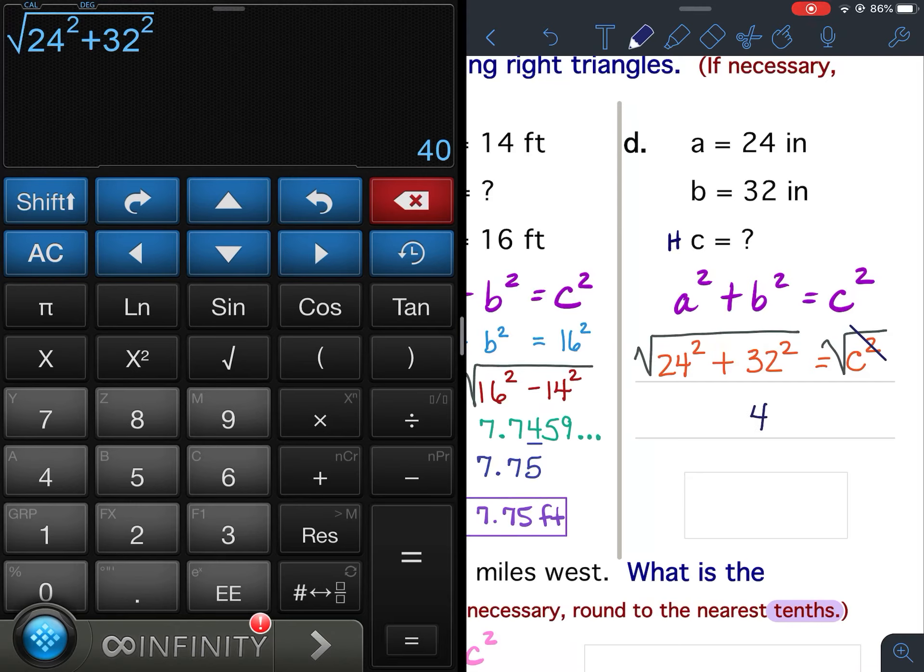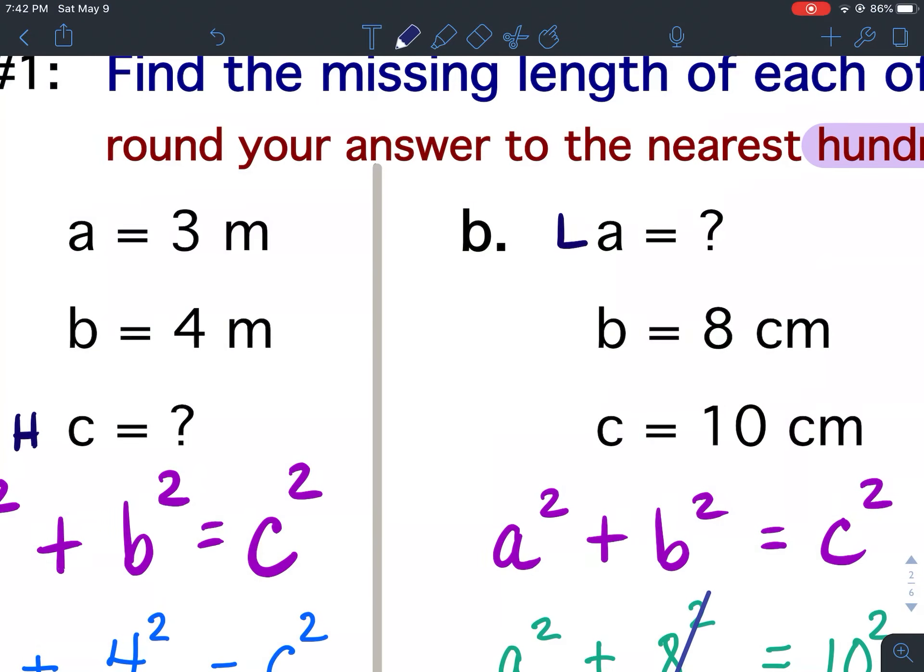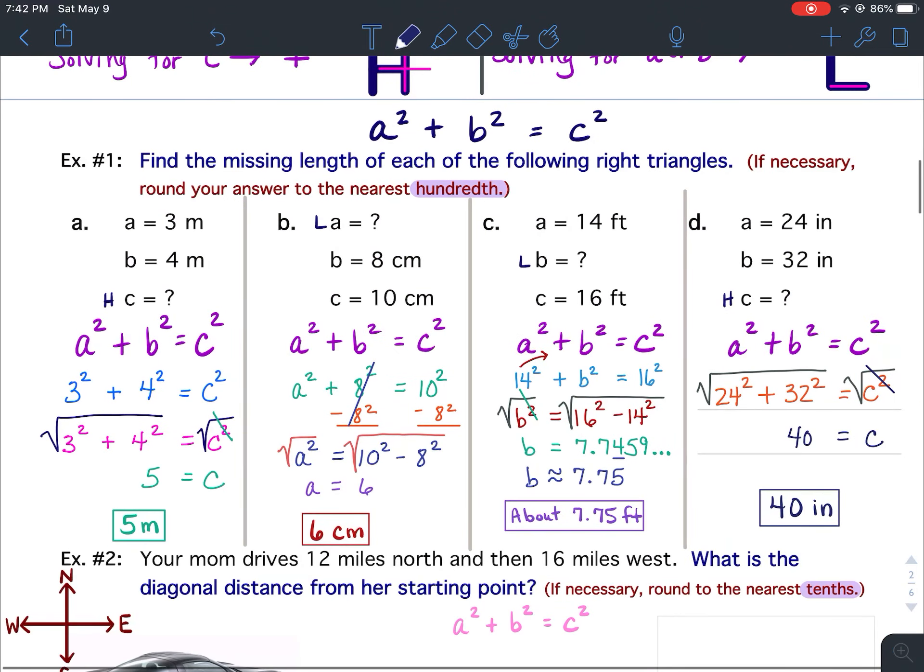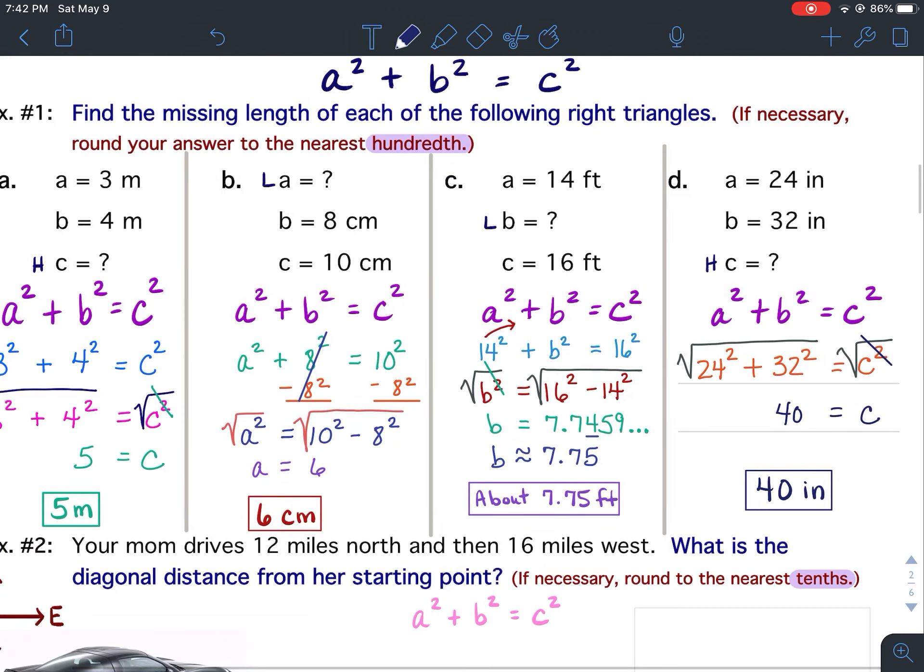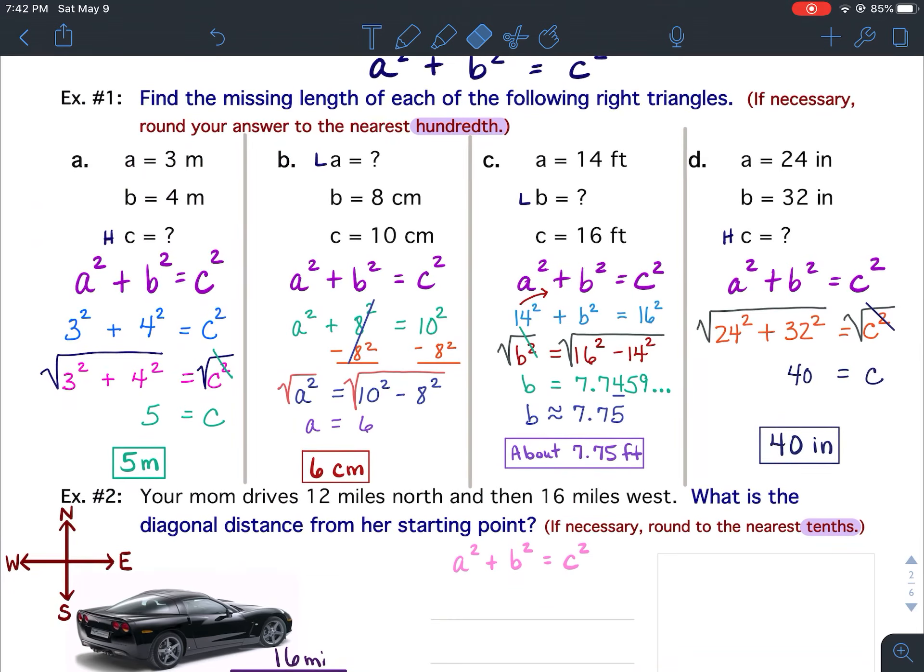So 40 equals c. Final answer is 40 inches. All right. So there is all of example one for you. If you have any questions, please let me know and I'd be glad to help.